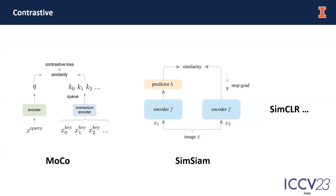Contrastive learning helps achieve incredible performance in the domain of computer vision. A series of well-known contrastive learning methods have been proposed, such as MoCo, SimCLR, and SimSiam. The goal of contrastive learning is to find plane training embeddings that could be transferred to various kinds of downstream tasks, and such an idea is realized by pulling positive pairs of images near to each other, and the negative pairs apart from each other.